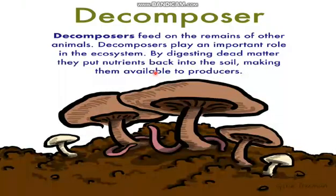Now, the decomposers. Decomposers break down dead matter. They feed on the remains of other animals — this could be body parts, excretory material, or dead bodies. Decomposers play an important role in the ecosystem by digesting dead matter and putting nutrients back into the soil, making them available to producers.